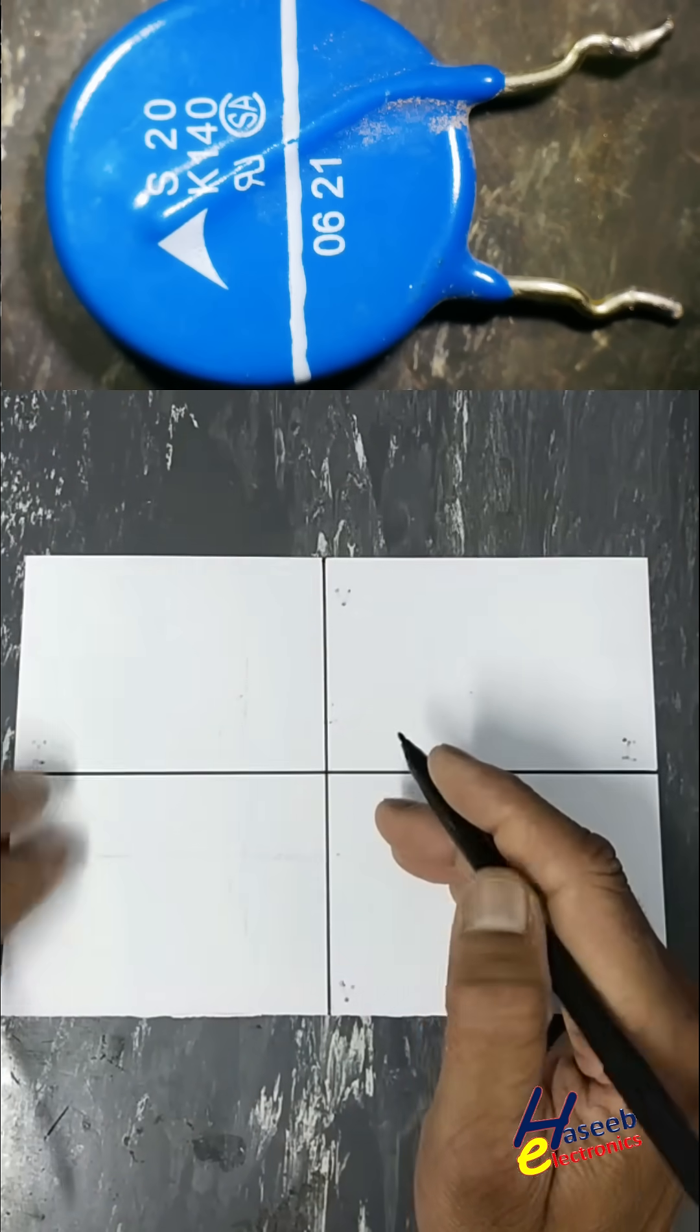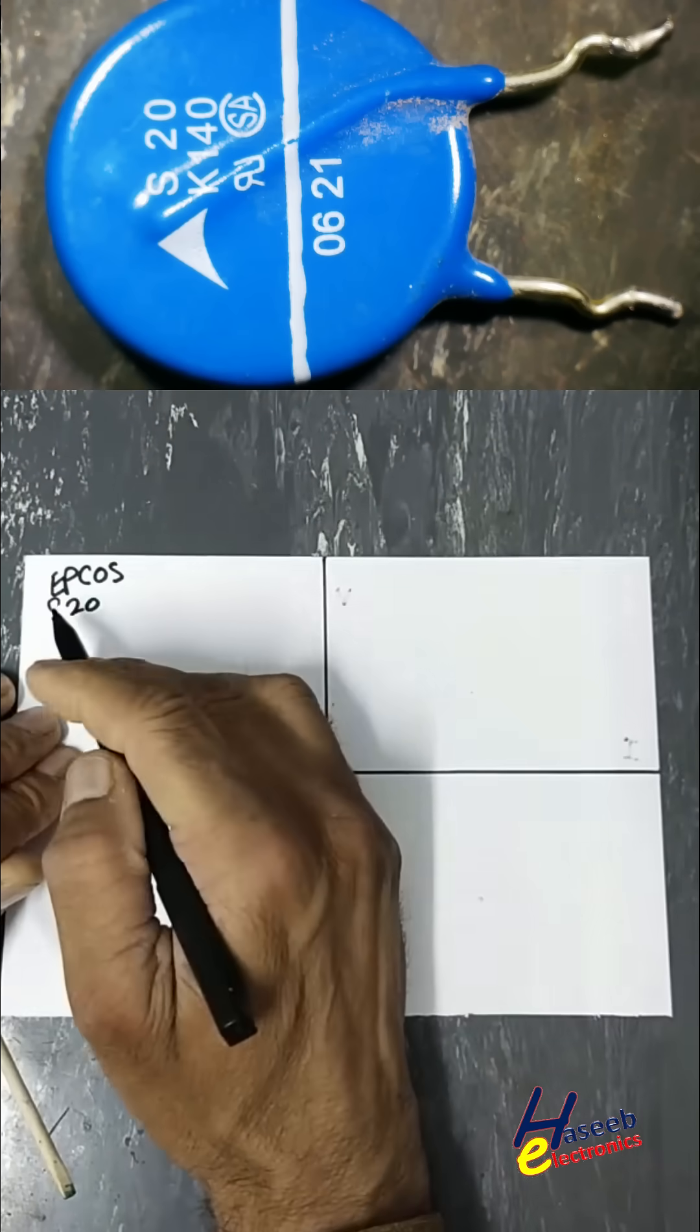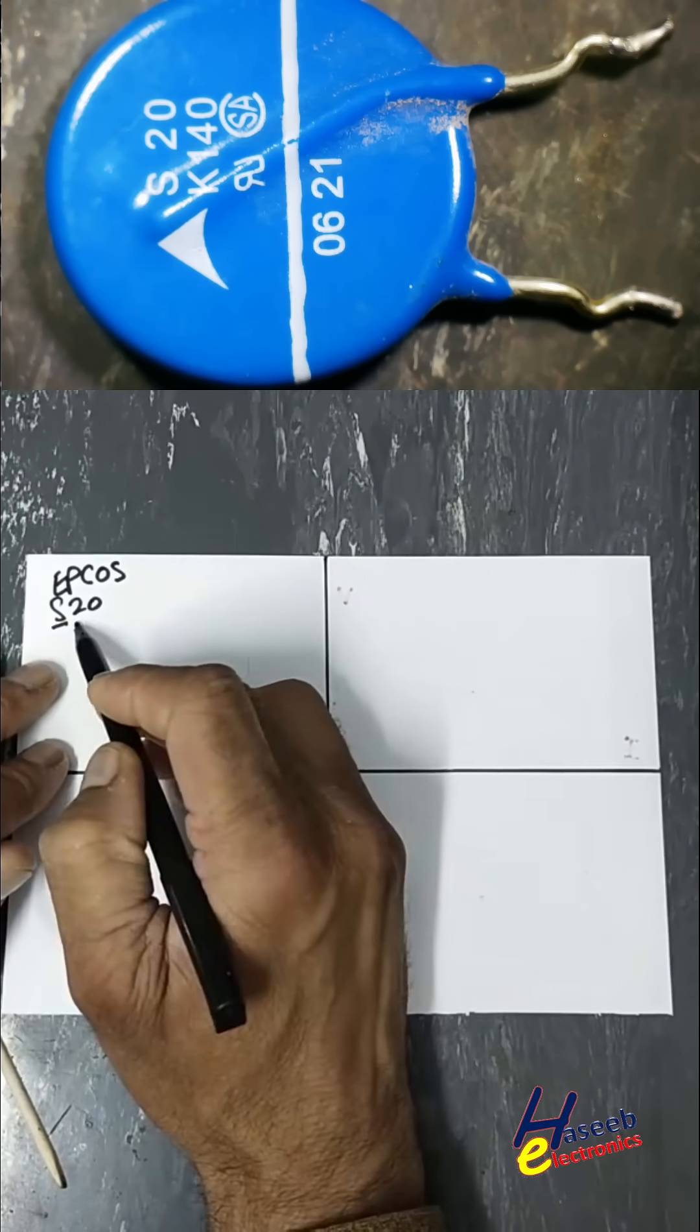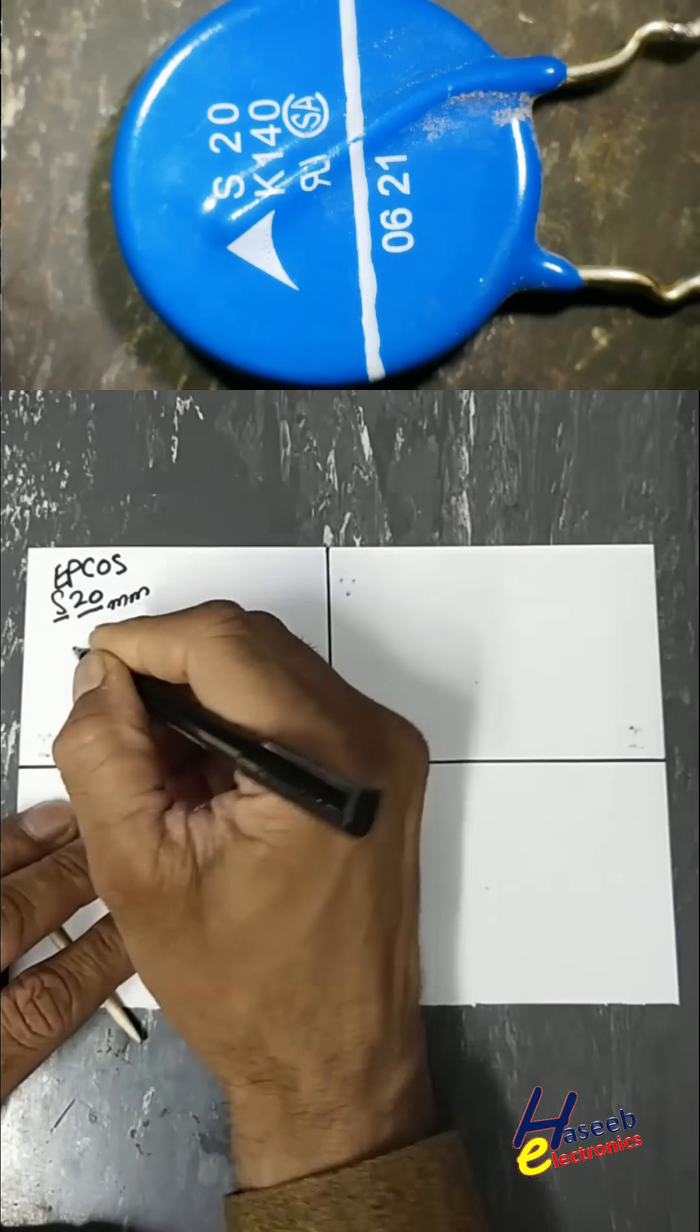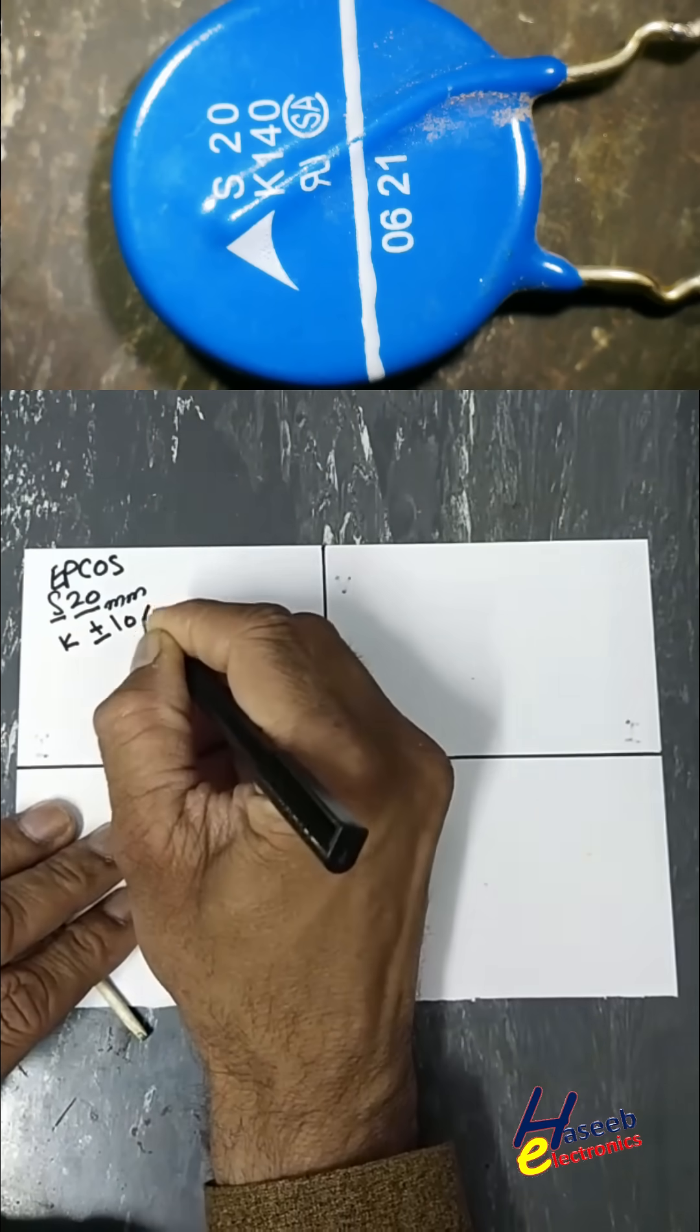This varistor is manufactured by APCOS, model S20, with a 20 millimeter disc size and K ±10% tolerance.